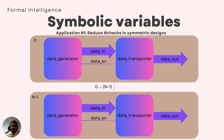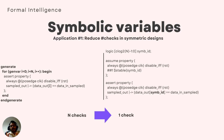Let's see how symbolic variables can reduce the number of checks in symmetric designs. Using the previous example, now we have n such structures of data generator and data transporter blocks, and you'd like to verify all the instances of the data transporter logic. A straightforward way is shown on the left hand side — there is a modeling logic that ensures sampled_out is a single clock pulse that goes high when you should be expecting data_in sampled at a certain point in the past to appear at the data output. This means you'd have n such checks to verify for all n data generator/data transporter pairs.